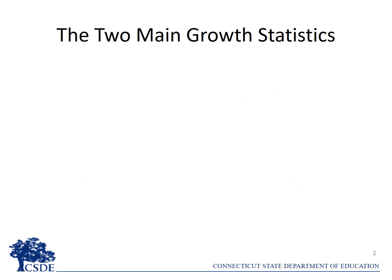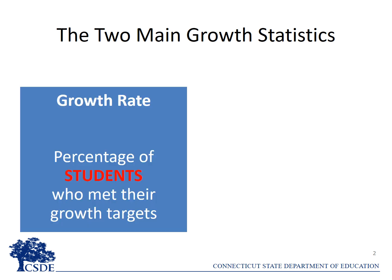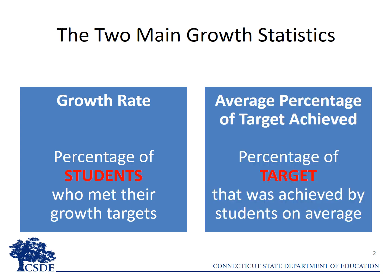The growth model provides two main statistics: the growth rate, which is the percentage of students who met their growth targets, and the average percentage of target achieved, which is the percentage of the growth target that was achieved by all students on average.